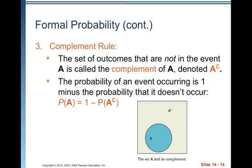The complement rule: the set of outcomes that are not in event A is called the complement of A, denoted A superscript C. The probability of an event occurring is one minus the probability that it doesn't occur: P(A) = 1 − P(A^C). You can also rearrange this to get P(A^C) = 1 − P(A).